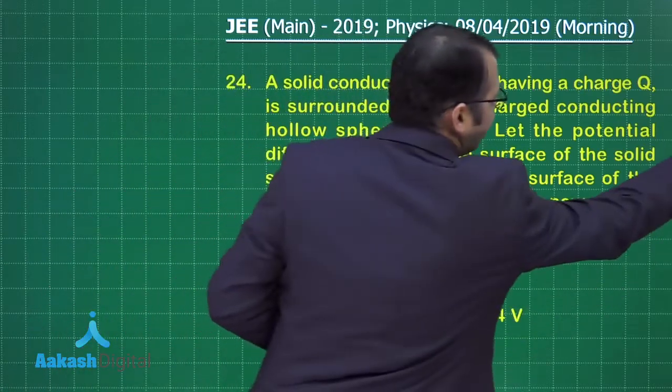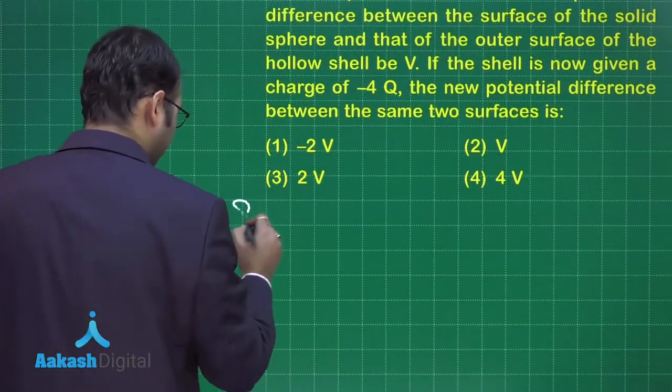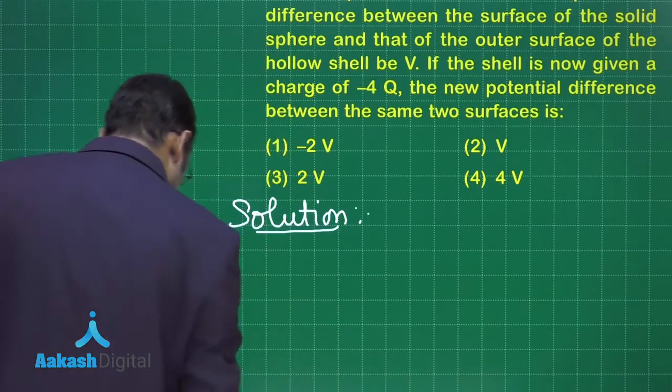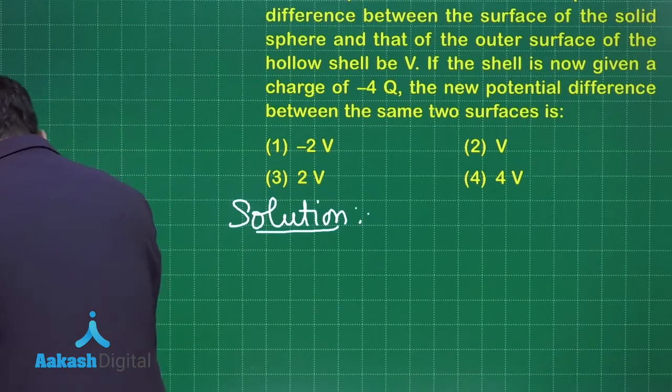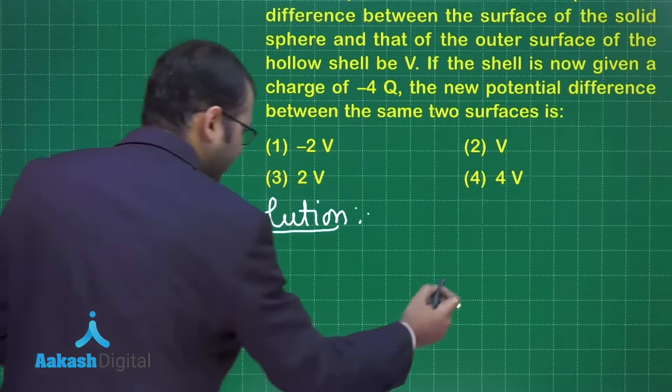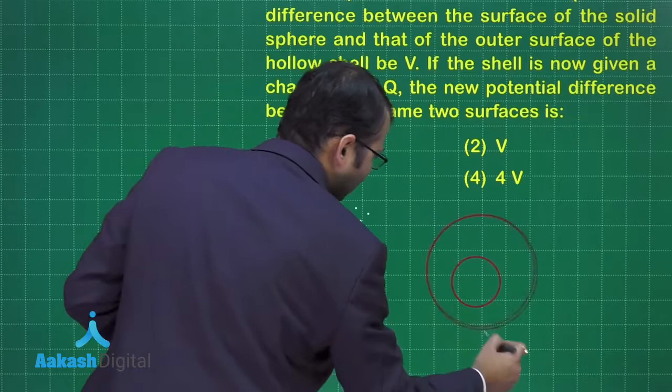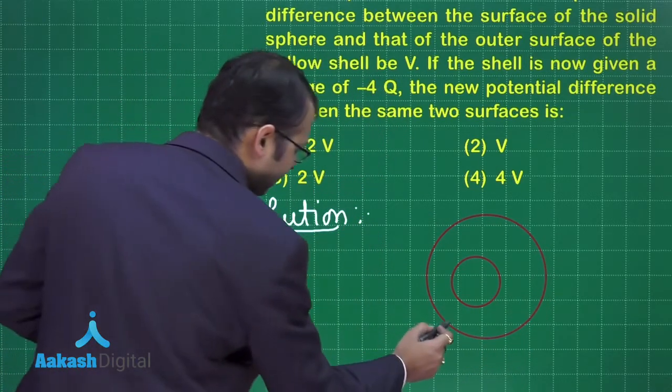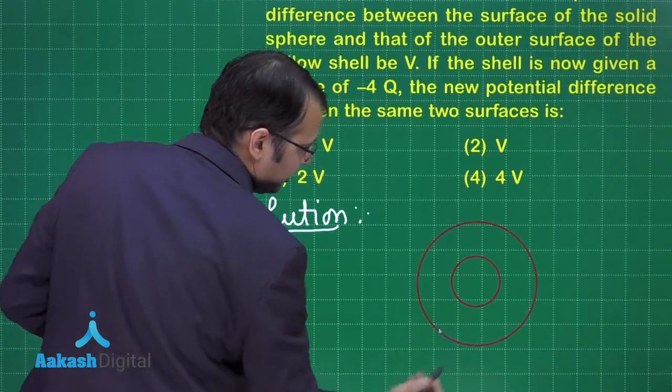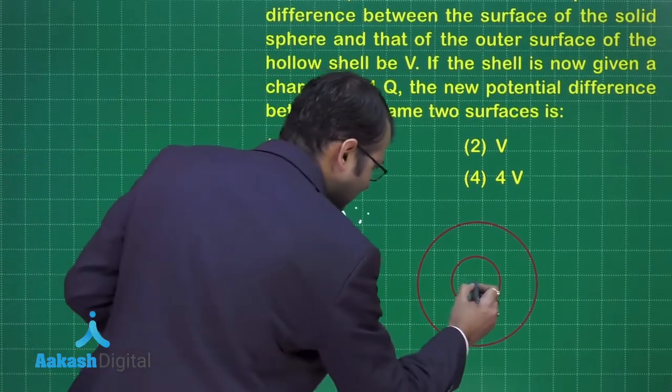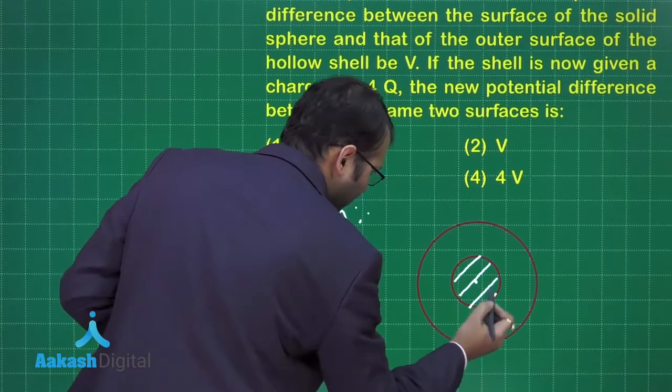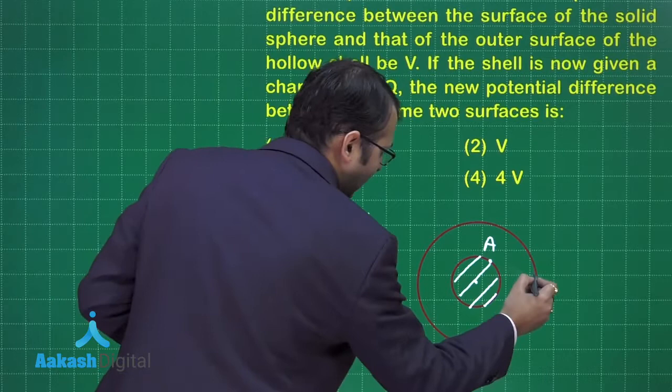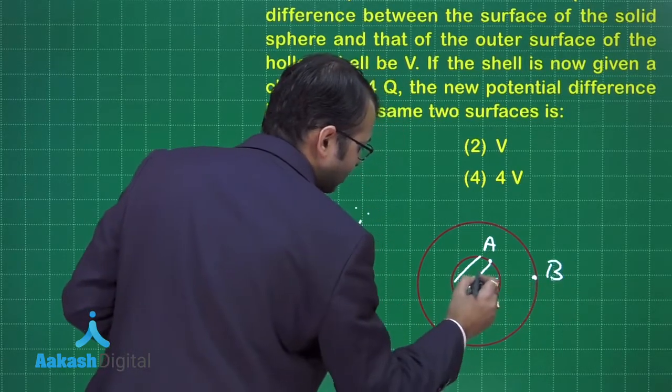The question is standard and is repeated many times, but let's solve it again. There are two concentric spheres: one solid which is inside, and one outer hollow shell. Since they are concentric, let's make them concentric. This is the solid part.